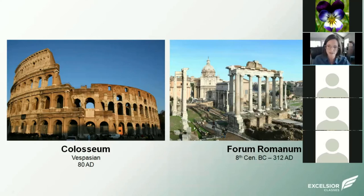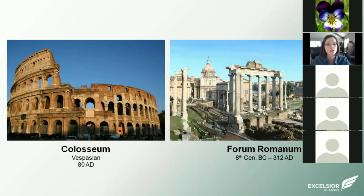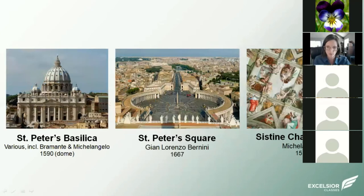The Roman Forum also shows the earliest example of the basilica building type. The basilica type was later used for churches because it was a meeting space — a long rectangular hall. We'll see the basilica building type appear again later in our tour.